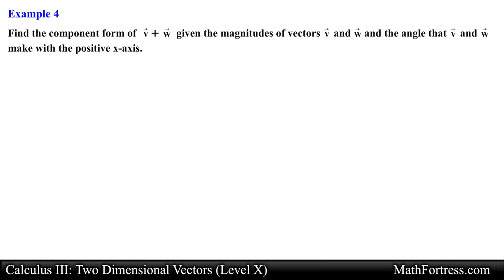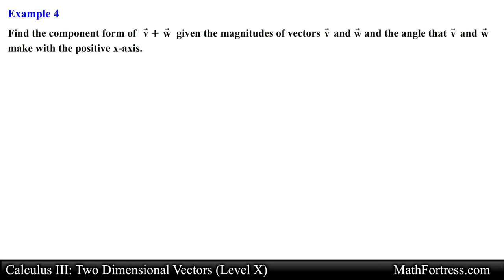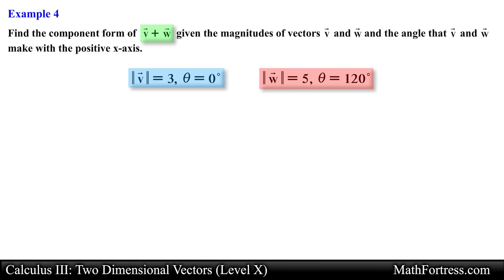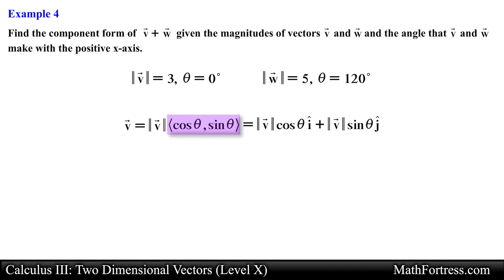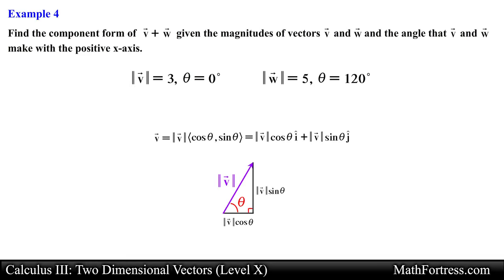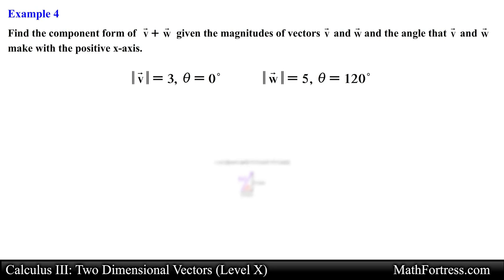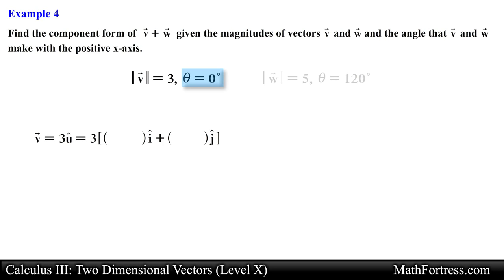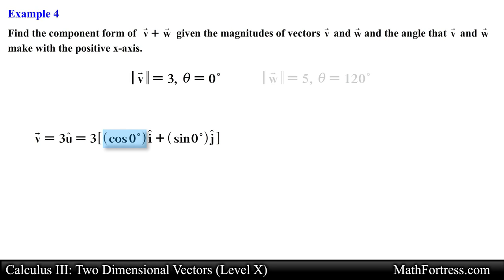Next example: find the component form of vector V plus vector W, given the magnitudes of vectors V and W and the angles they make with the positive x-axis. We use the trigonometric form of a unit vector — essentially right triangle trigonometry — to find the x and y components. Since vector V has a direction of 0 degrees, cosine of 0 equals 1 and sine of 0 equals 0, so it only has an I hat component.